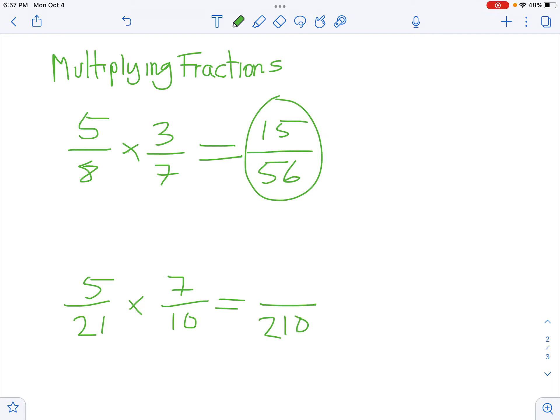5 times 7 is 35. We get 35/210. You should notice that both 35 and 210 are divisible by 7.